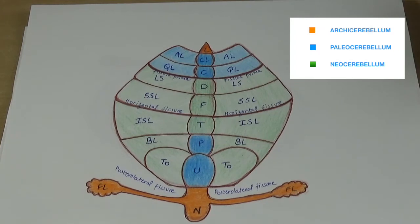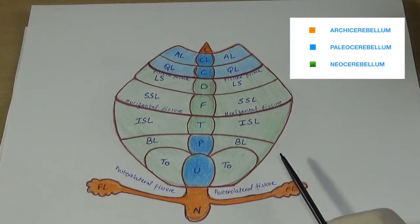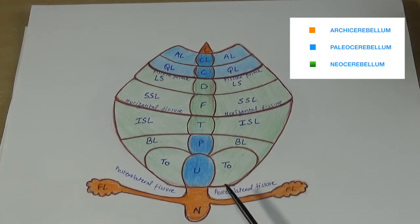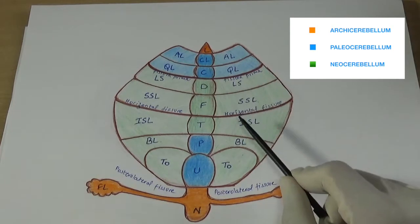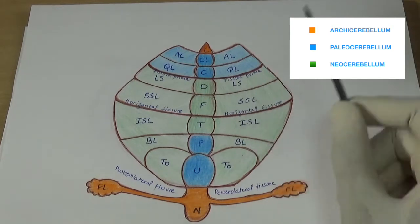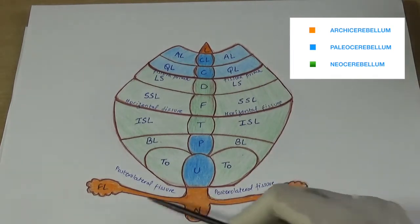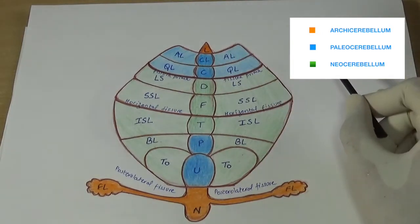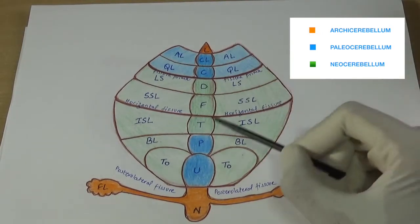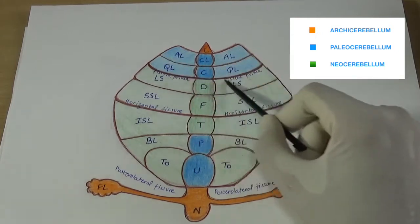So far we have seen the anatomical classification. Now we turn to the morphological classification. Morphologically, the cerebellum is divided into archicerebellum, paleocerebellum, and neocerebellum.